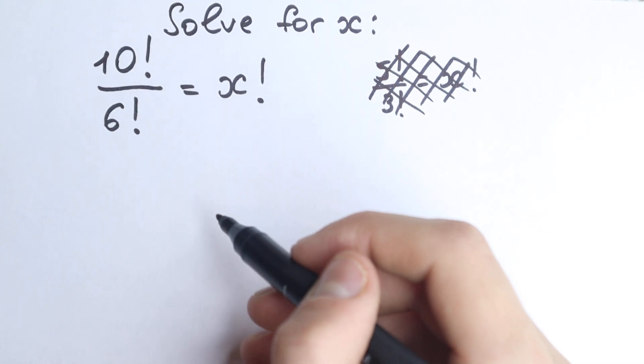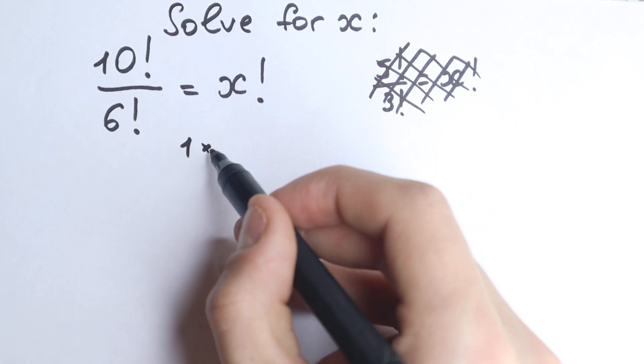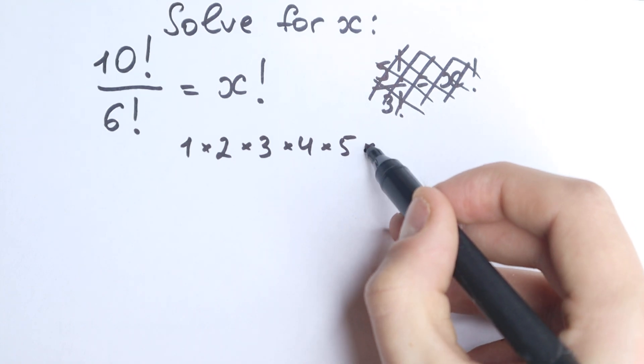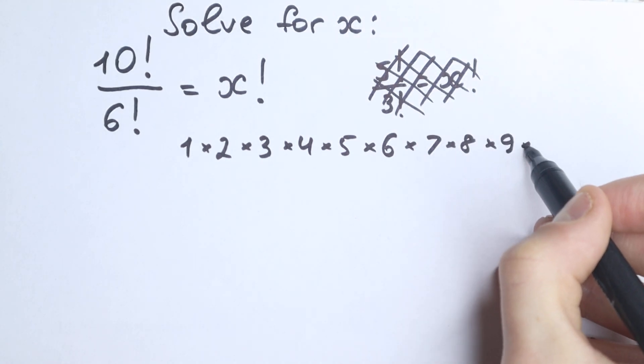Okay, 10 factorial, this is a product from 1 to 10, all of you should know this. We have 1 times 2, I just write these products out, so 2 times 3 times 4 times 5, 6, 7, 8, 9, and 10, yeah, this is our product.